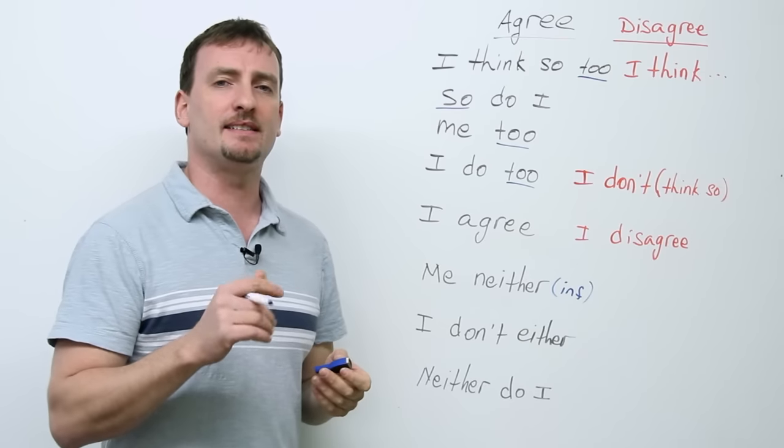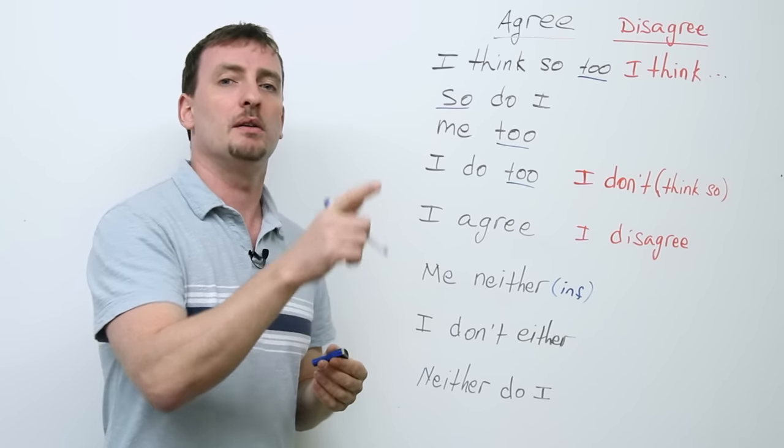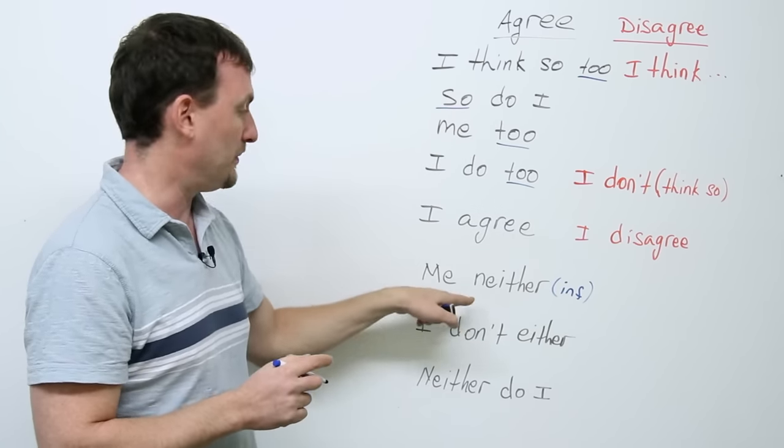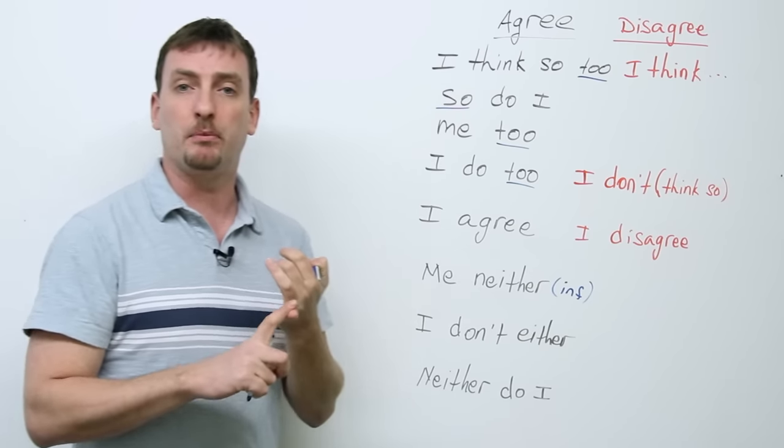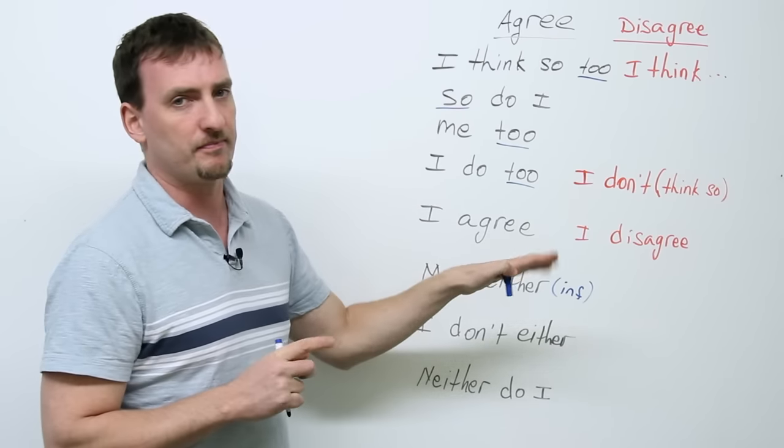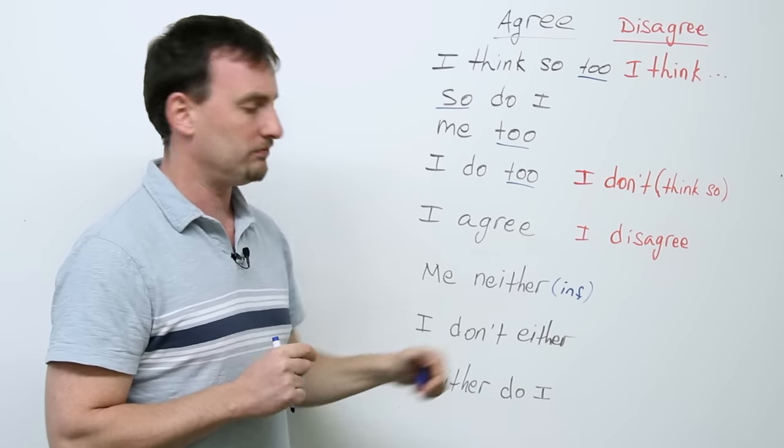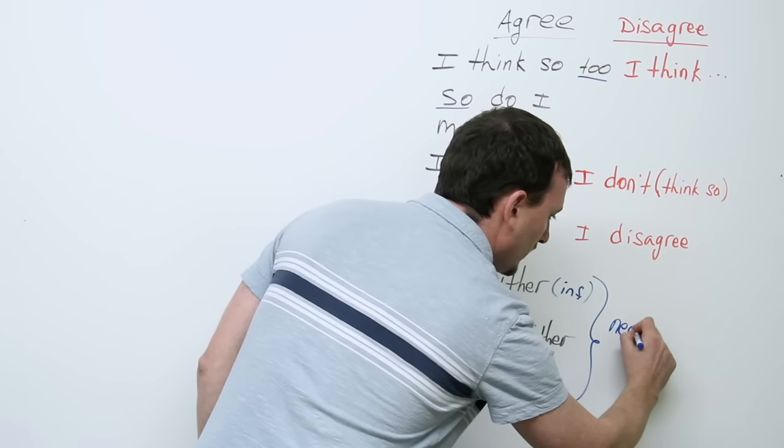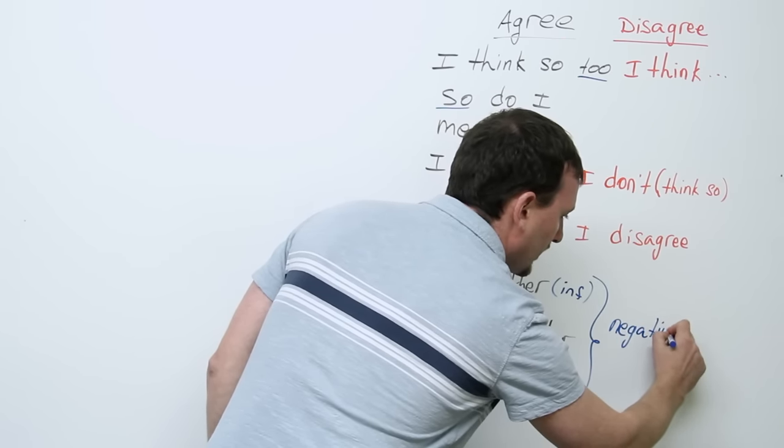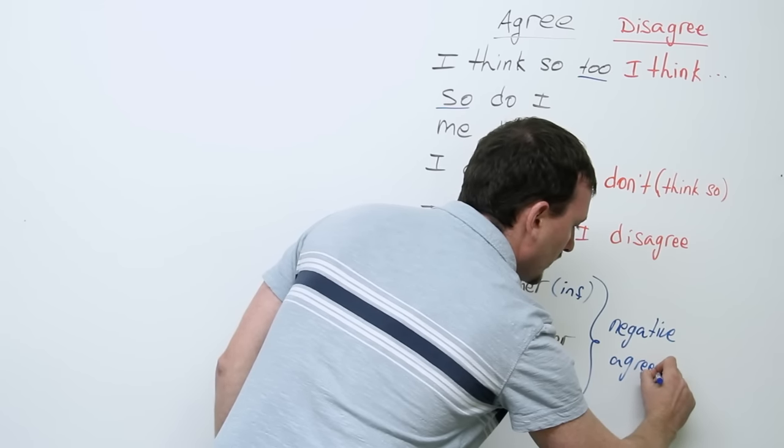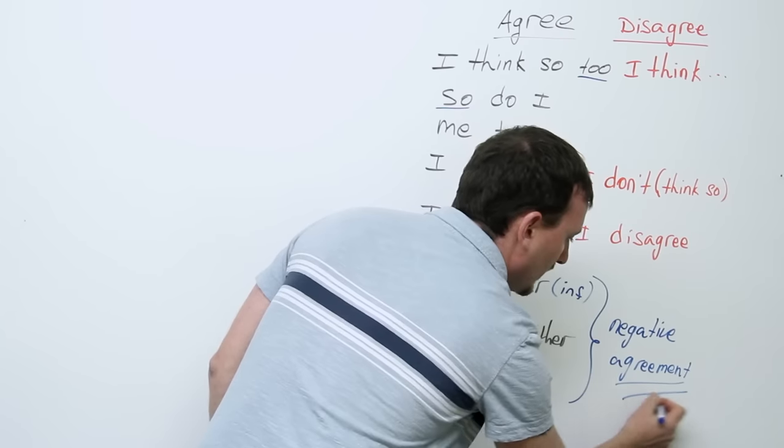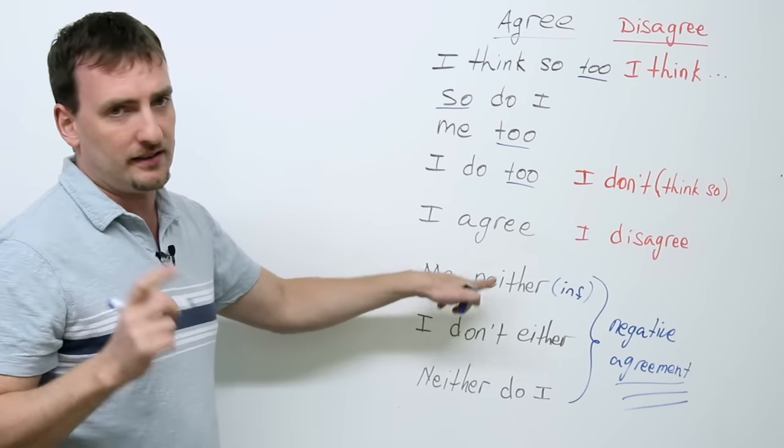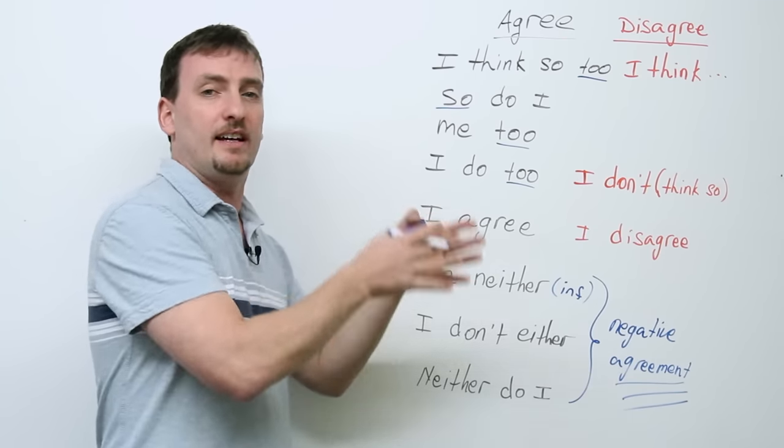But if somebody says, I don't think Mitt Romney is going to win, you can't use any of these either. You must use these. So, I don't think Mitt Romney is going to win. Me neither. I don't either. Neither do I. Okay? So very, very important. You're agreeing with a negative. But you are still agreeing. Okay? Very important to remember that. You're not disagreeing here. You're agreeing with a negative statement.